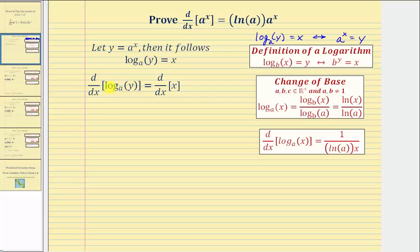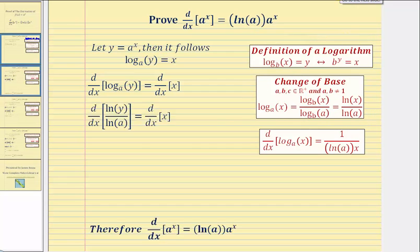If we know the derivative formula for log base a of x with respect to x, we could use this to find the derivative of the left side. Or if we don't know this derivative formula, we can use the change of base formula given here. For this proof, we'll use the change of base formula where log base a of y is equal to natural log y divided by natural log a.